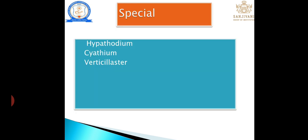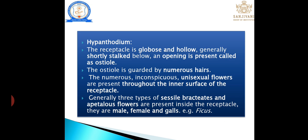Special types of inflorescence are classified into three types: hypanthodium, cyathium, and verticillaster. Hypanthodium: the receptacle is a globose, hollow, shortly-stalked structure; its opening is called an ostiole, which is guarded by numerous hairs. Inconspicuous, unisexual flowers are present inside the receptacle cavity. Three types of flowers are produced inside: apetalous male flowers, female flowers, and gall flowers.